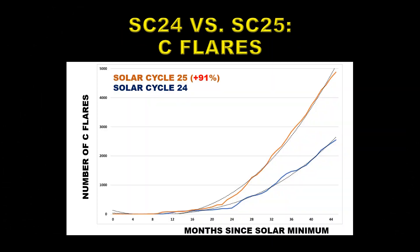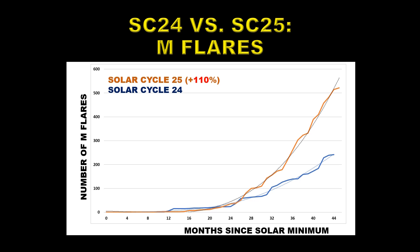Speaking of flares, we're showing here the number of C flares. Orange is Solar Cycle 25, blue is Solar Cycle 24, and Solar Cycle 25 is outperforming Solar Cycle 24 so far by 91%. That's quite a large margin, but the slope has dropped a little bit since last month because of this relatively quiet period that we've just had.